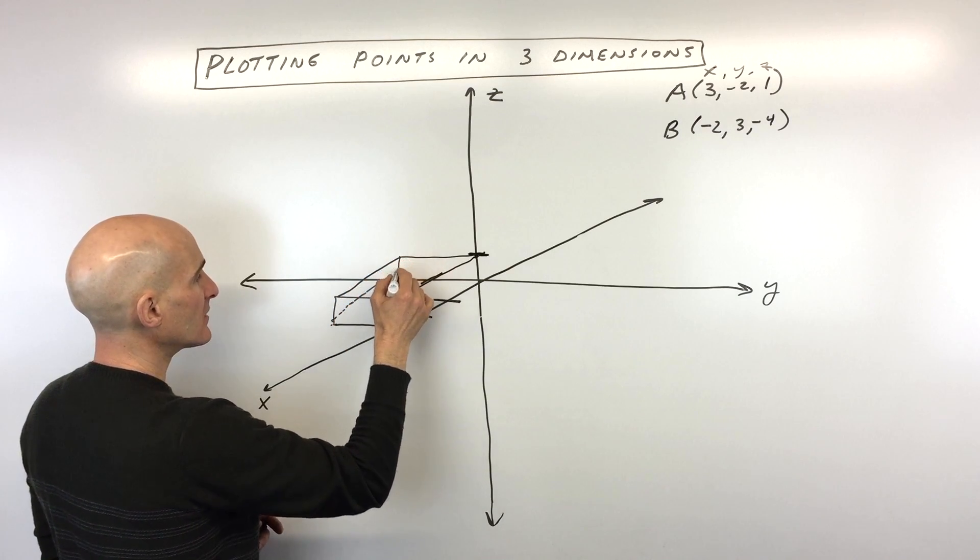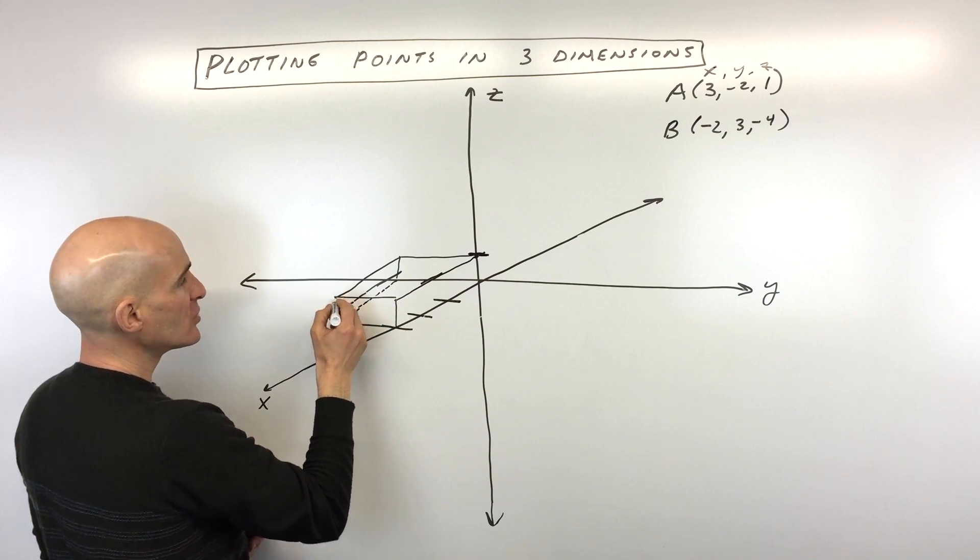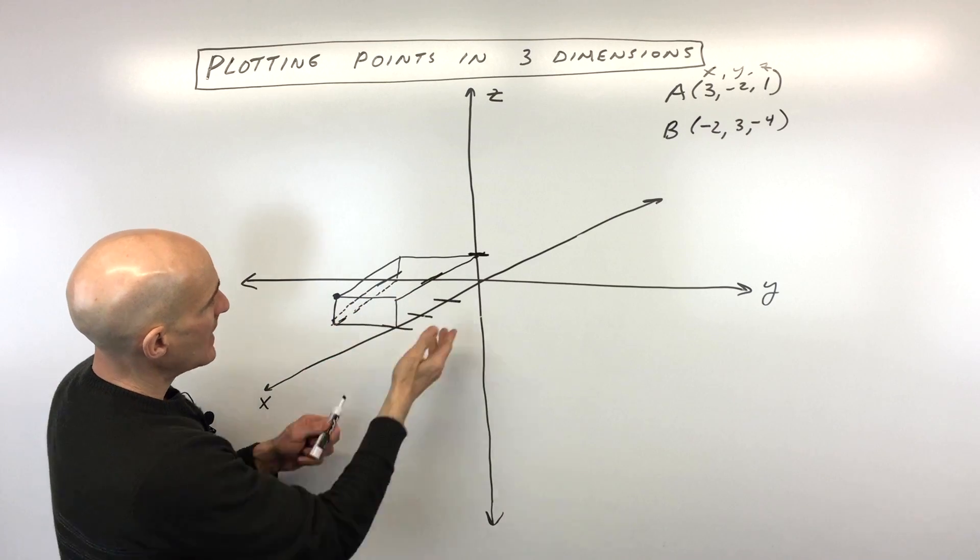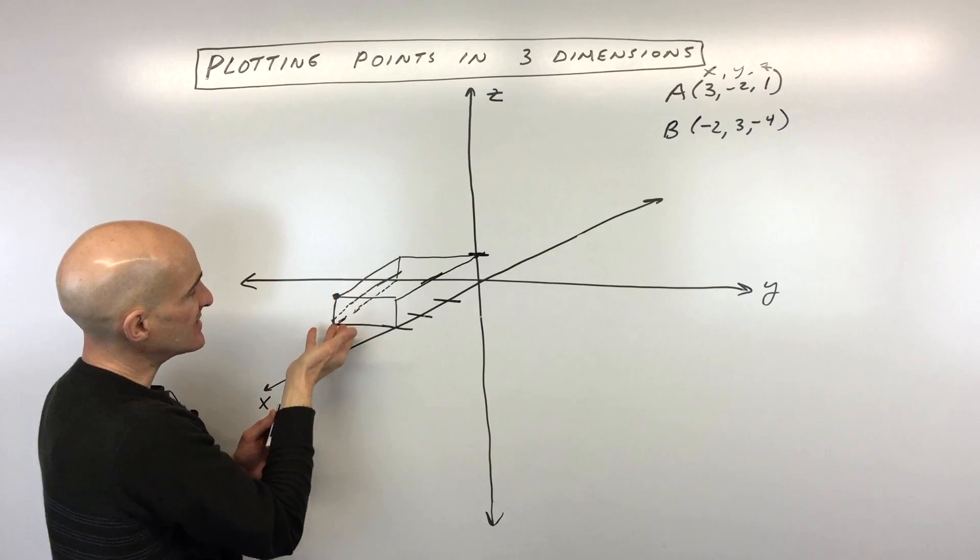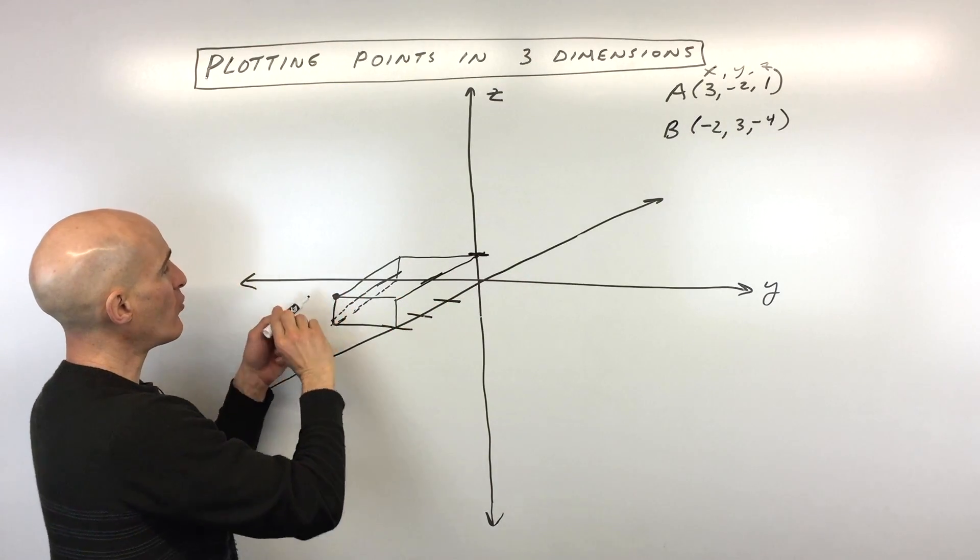Okay, so something like this. And you can do a little bit better as you practice. But what this does is you can see this box coming out at us. And you can see that it's elevated above this XY plane, going up one. So this is our point A.